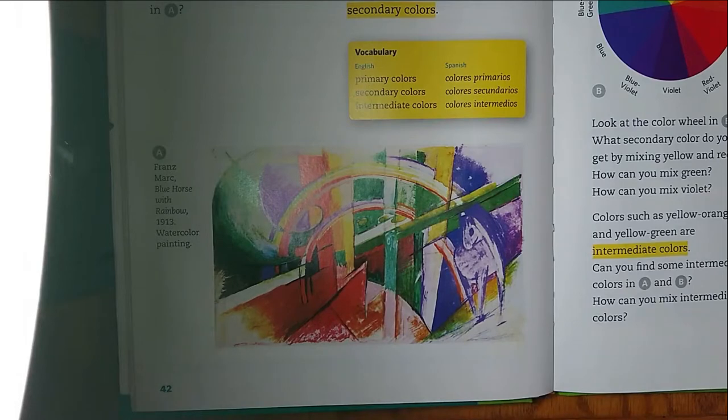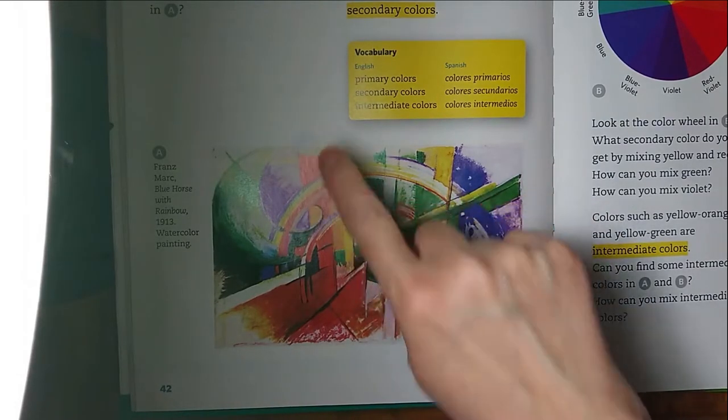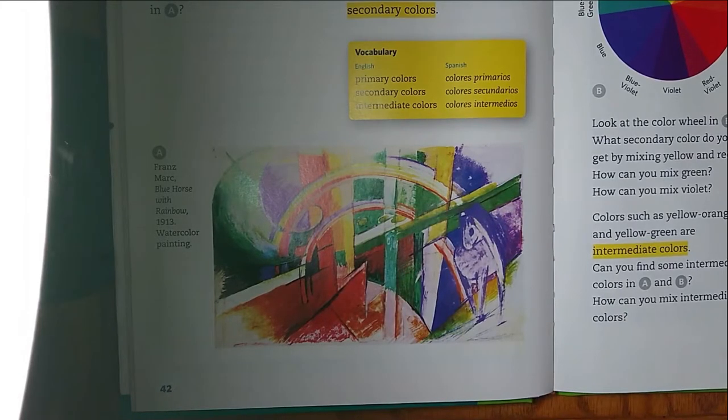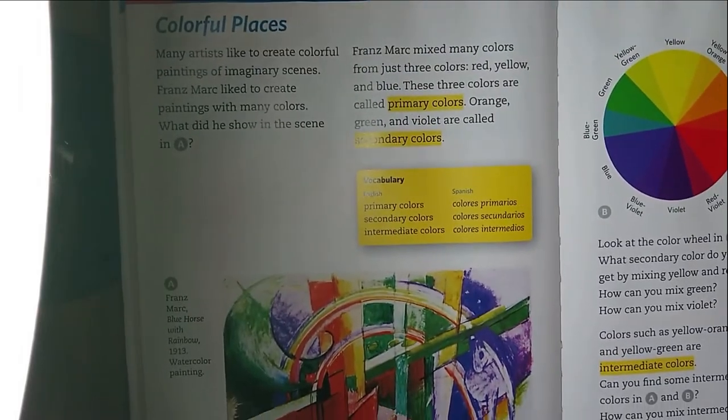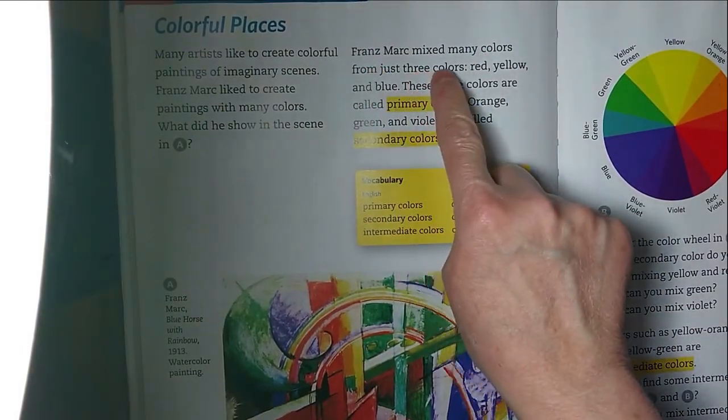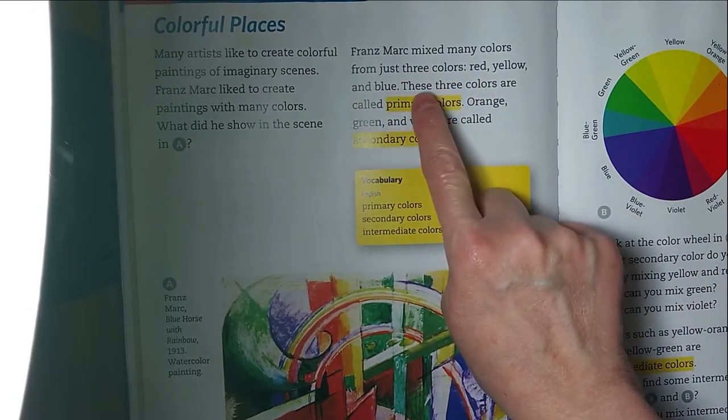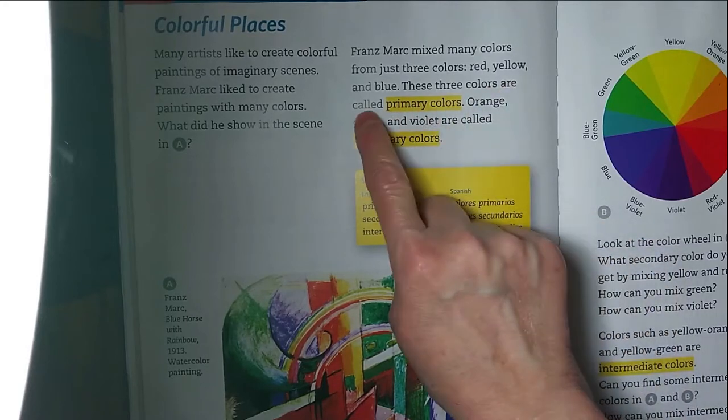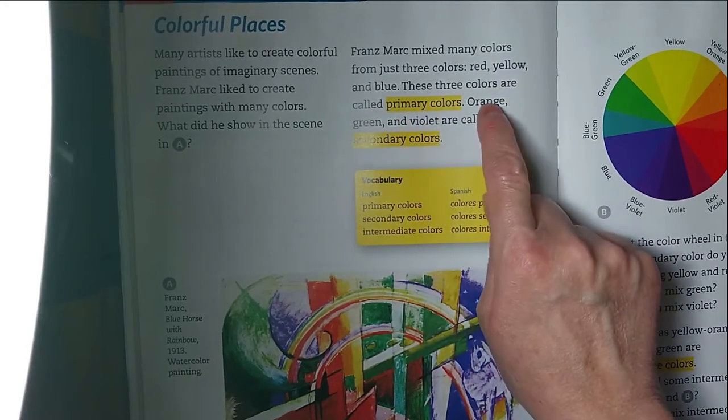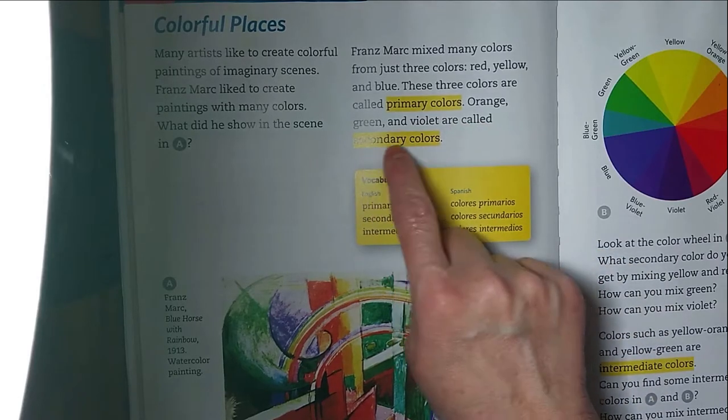Franz Marc makes many colors from just three colors: red, yellow, and blue. These three colors are called primary colors. Orange, green, and violet are called secondary colors.